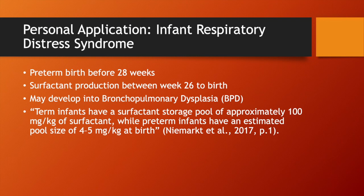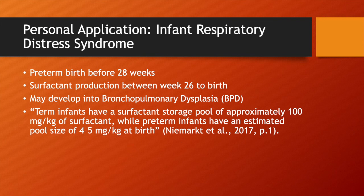Next we will talk about a specific disease called infant respiratory distress syndrome. Infant respiratory distress syndrome occurs in preterm birth — specifically in infants born before 28 weeks. Surfactant production usually occurs between week 26 and the time of birth, so it makes sense that infants born before 28 weeks will have a lesser amount of surfactant than a normally born infant.